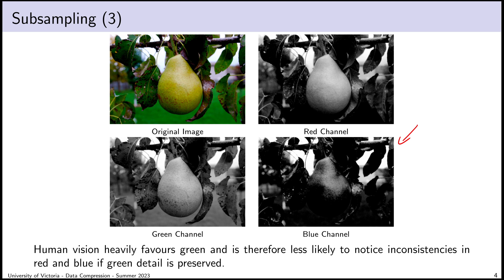So human vision favors green in terms of colors, and is also very good at distinguishing differences in brightness independent of color. What we want is to throw some information away from our original image. By transforming the image into a representation that packs greens and brightness into one channel and sets aside reds and blues into another, we can cleverly eliminate detail in red and blue in a way that human eyes are less likely to notice.